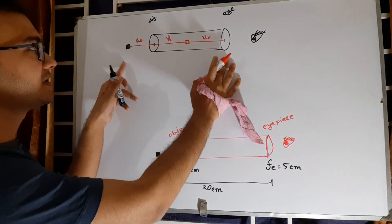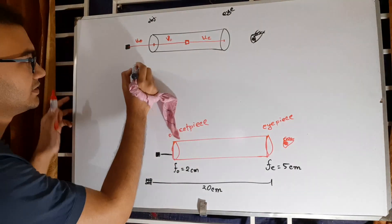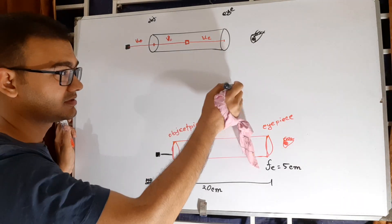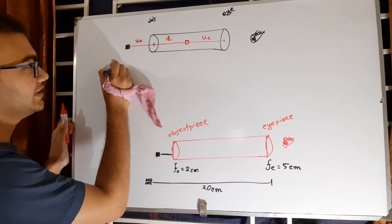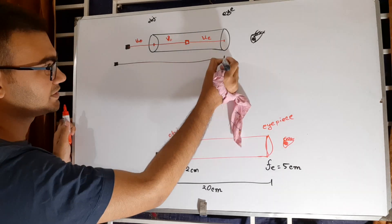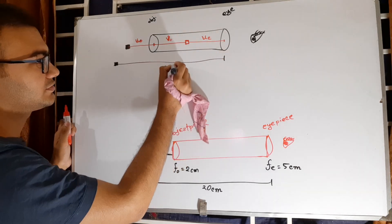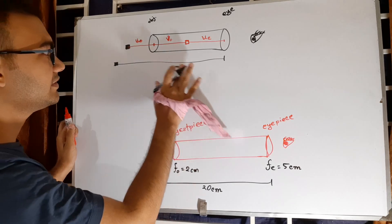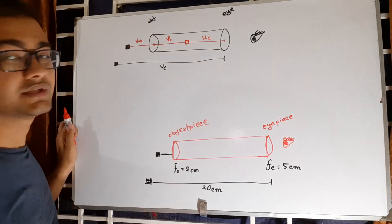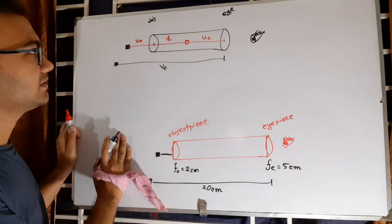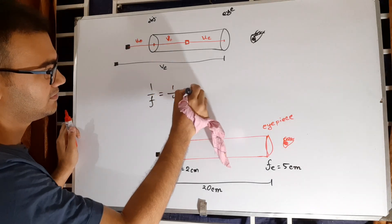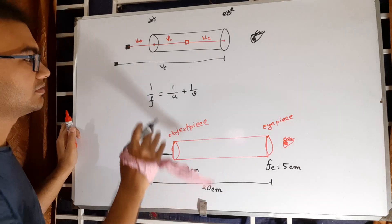The ultimate final image, the secondary image, comes out of the two lenses. It was given as 20 centimeters from the eyepiece. This distance is V_E, and the distance of the primary image from the eyepiece is U_E. We will apply the formula: 1/F = 1/U + 1/V.